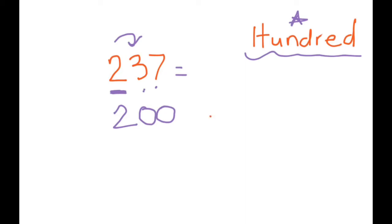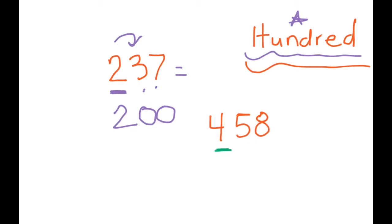Suppose we have to round the number 458, and we're rounding again to the nearest hundred. What do we do? We find our number — it's in the hundreds place, it's a four. We look next door. Is that number four or more? It is. So we're going to add one to the number in the hundreds place. Four plus one is five, and every other number after that changes to a zero.